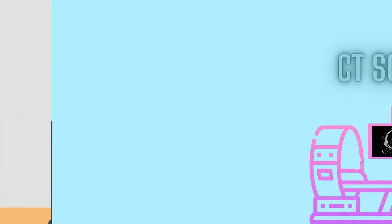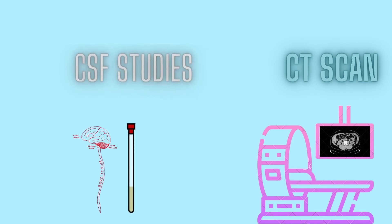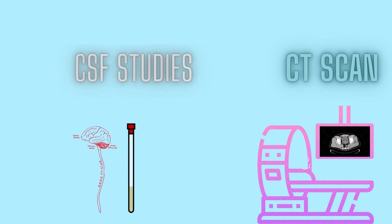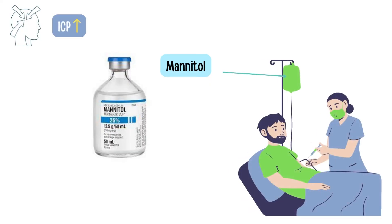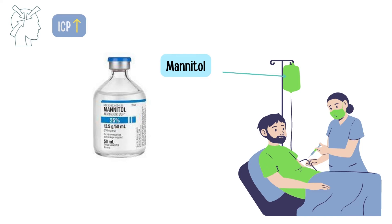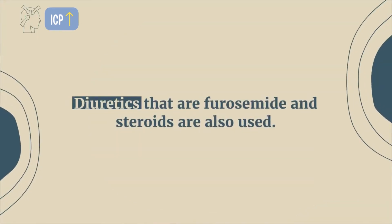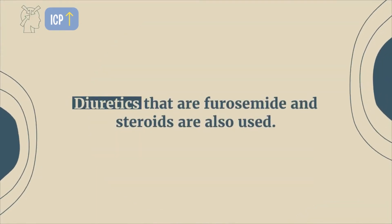The treatment goals largely depend on the cause of raised ICP. Investigations like CT scan to rule out hemorrhagic transformation and CSF studies to rule out infections should be carried out as early as possible. Once confirmed, the cause should be treated accordingly. In cases of raised intracranial pressure, mannitol, an osmotic diuretic, is used most commonly to reduce intracranial pressure. Other medications include diuretics such as furosemide, and steroids are also used.